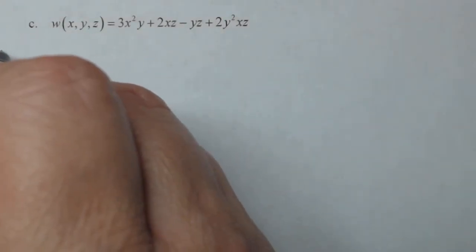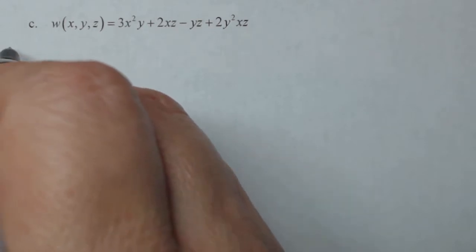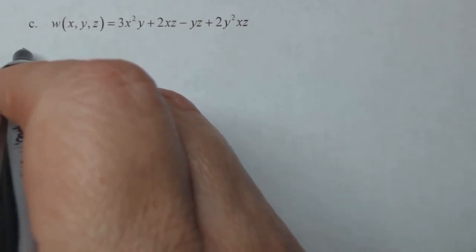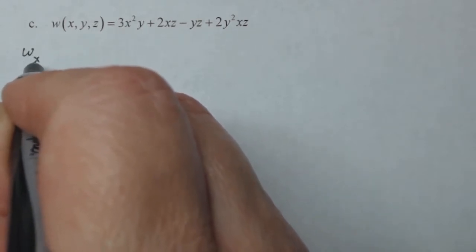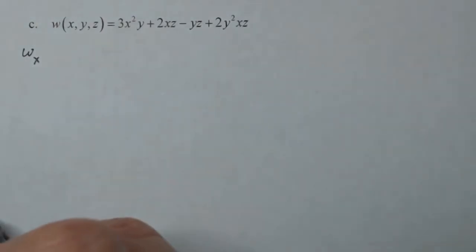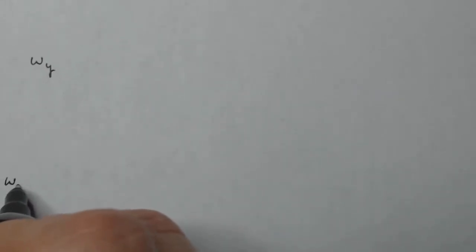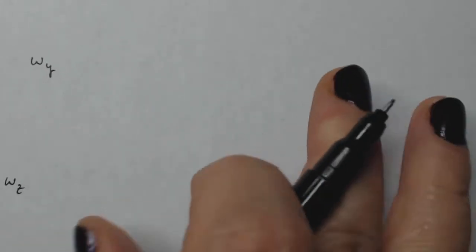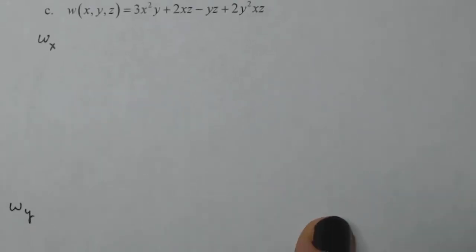So golly, this is going to be a lot of derivatives. So I'm going to do W sub X, W sub Y, then W sub Z, and I'm a crooked writer here.